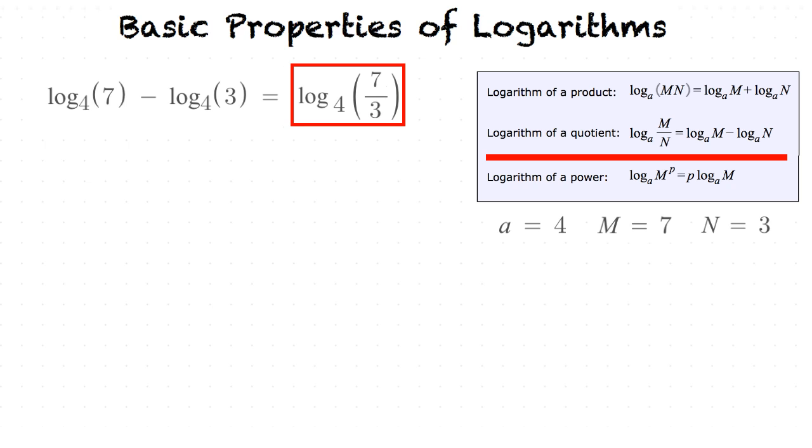Oh I understand, so when we have two logarithms with the same base being added together, then their components will be multiplied together. And if we have two logarithms with the same base being subtracted, then their components are going to be divided. Yeah, exactly.